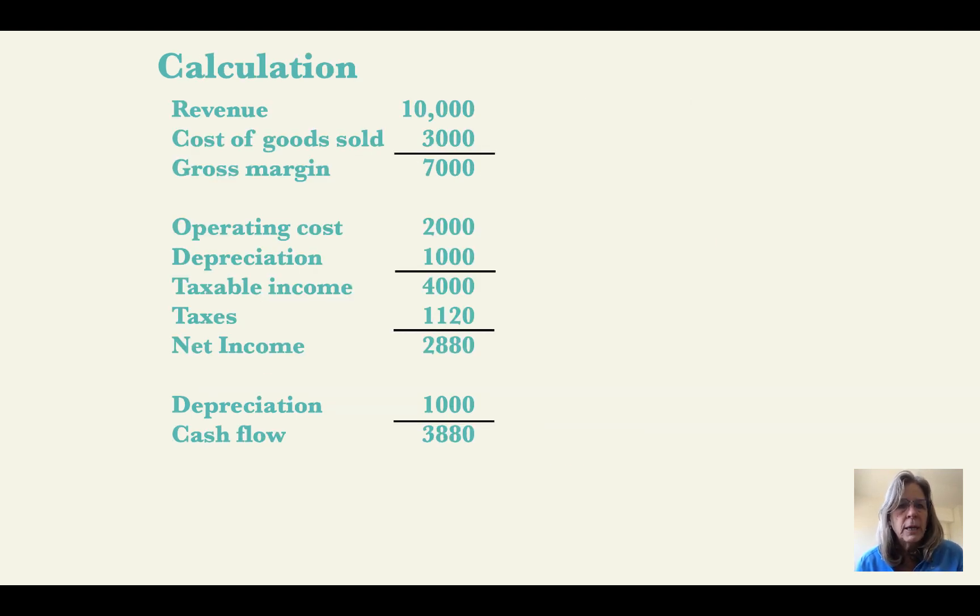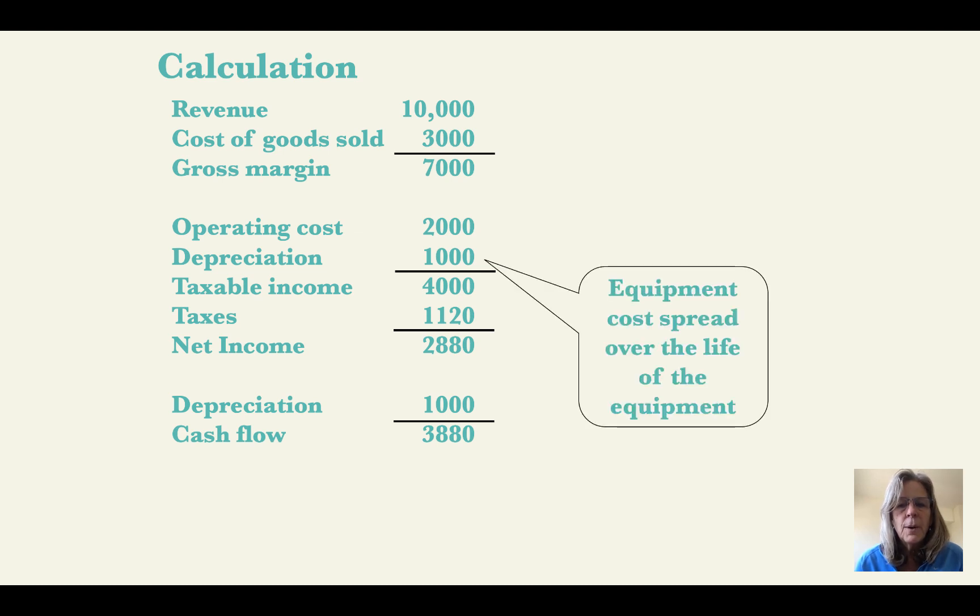So this is our general calculation of cash flow. Let's go through it step by step. The first item, revenue, is often the volume sold times the price per unit. So in this case, a thousand units at $10 a unit. Cost of goods sold is a thousand units, the same volume that we sold, but at the variable cost for these units. Then we take that difference and that is gross margin. We also subtract from that overhead or operating costs which include material supplies, rent, things like that. And then from that, we subtract depreciation, which is the equipment costs spread over the life of the equipment. If you refer to the other depreciation videos, you know what I'm talking about here.